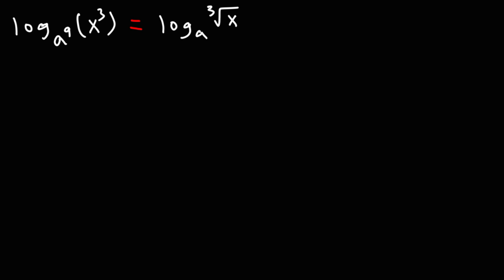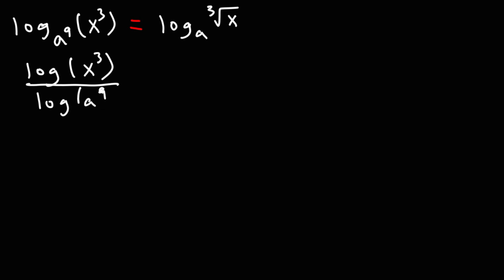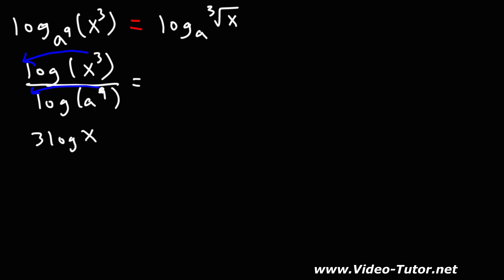For this problem, I'm going to start from the left side and convert it to the right side. Using the change of base formula, this becomes log x cubed divided by log a to the 9th power. Once you do one example, the others become easier because you know the pattern to follow. Now just like before, we move the exponents to the front of the logs: log x cubed becomes 3 log x, and log a to the 9 becomes 9 log a.